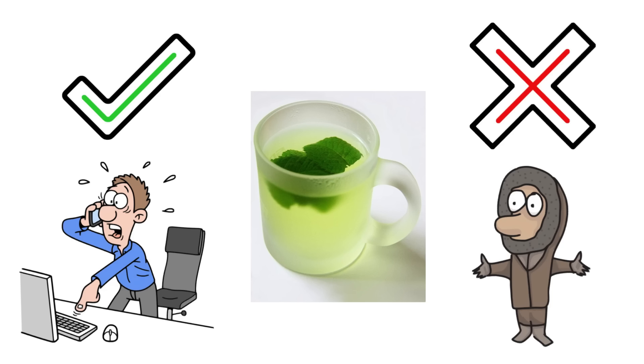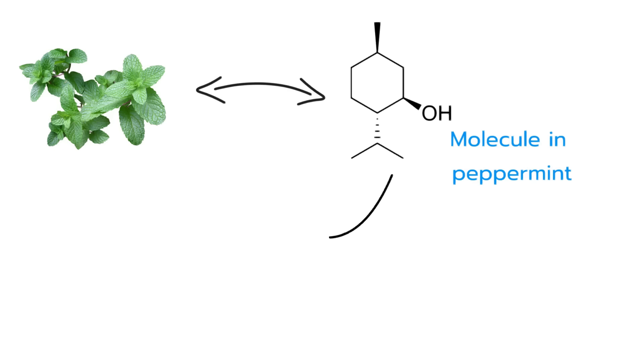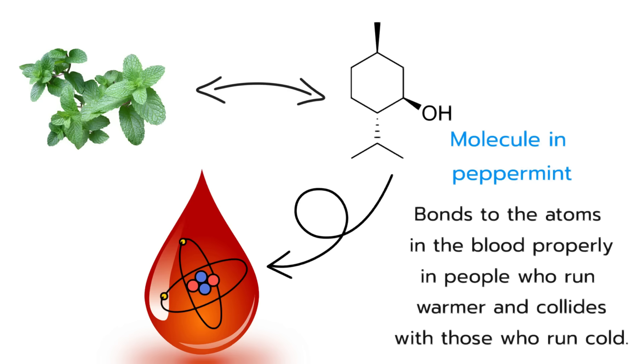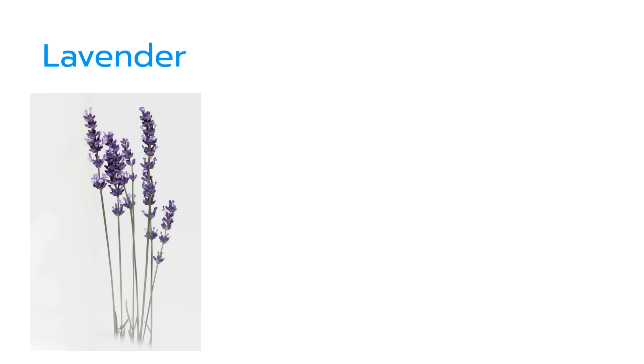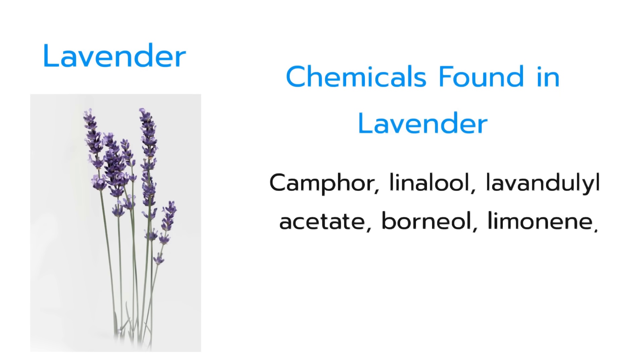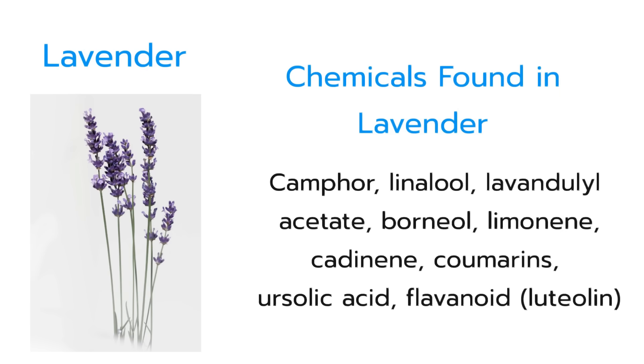That is why there is no such thing as a one-size-fits-all concept and each person should be diagnosed by their particular needs, as each person is chemically doing something different. Another cooling herb is lavender. Lavender is also used for the lungs and liver and is made up of camphor, linalool, and other chemicals.